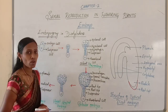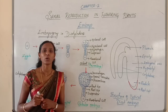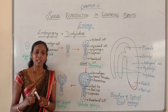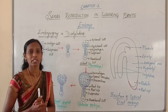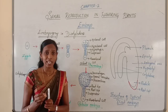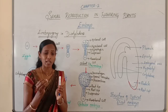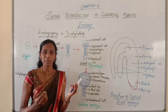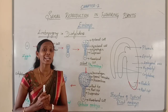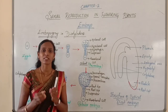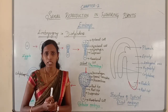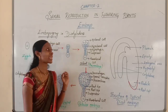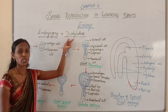The process of formation of embryo from the zygote is called embryogeny. There are different types of seeds — monocot seeds and dicot seeds. Though the seeds differ greatly, the early stages of embryo development are similar in both monocotyledons and dicotyledons. First, let us understand embryogeny in dicotyledons.